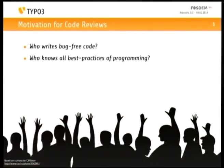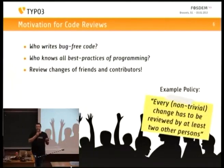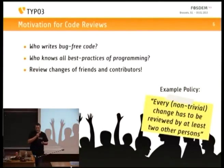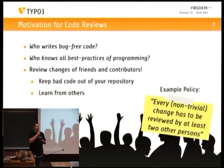The majority sometimes fails and doesn't know all the best practices of programming. So it's just good to review the work of yourself and of others — whether official committers and team members or just any contributor. An example policy would be that every change which is not trivial has to be reviewed by at least two other people. Gerrit allows you to enforce such policies. You keep bad code out of your repository — no 'we'll fix this later' — and you learn from others' skills.